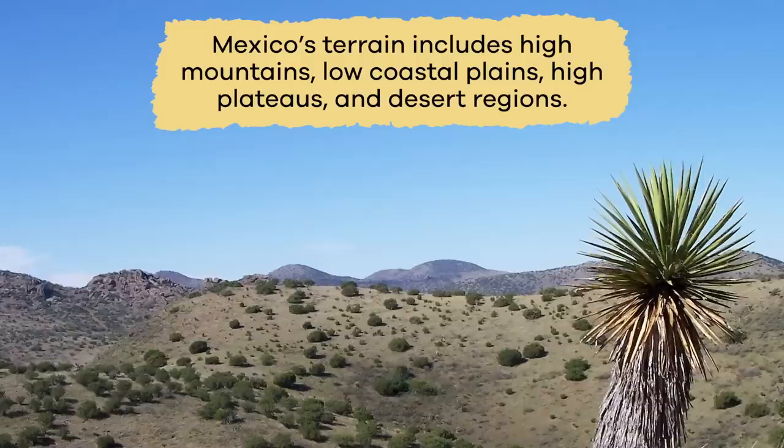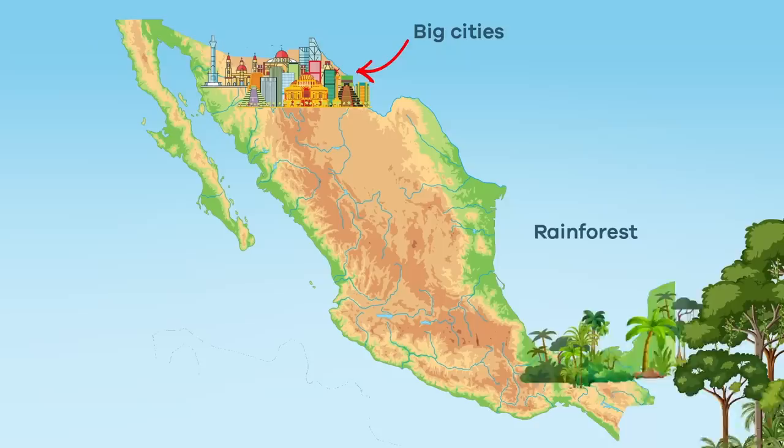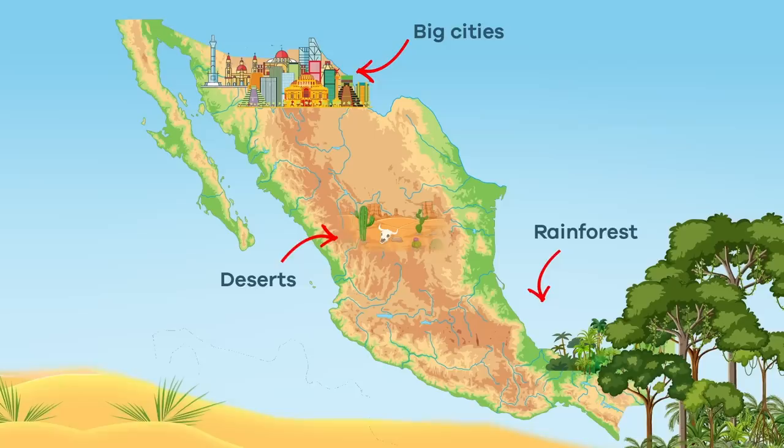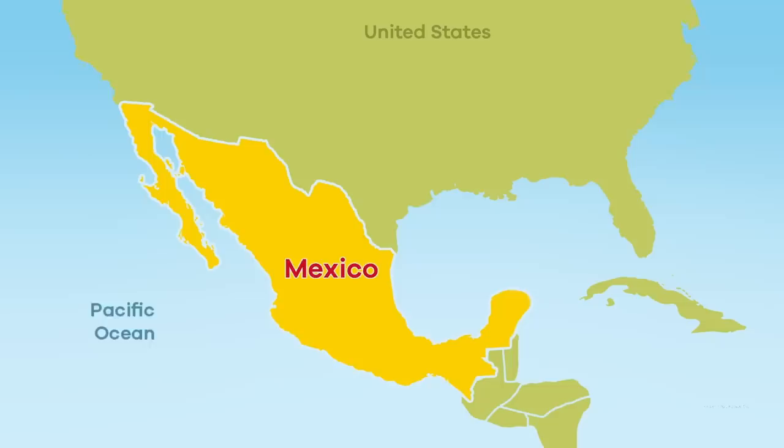Mexico's terrain includes high mountains, low coastal plains, high plateaus, and desert regions. Most of Mexico's bigger cities are found in the northern parts of the country, with rainforests in the south and east and deserts in the west. The climate varies from desert to tropical depending on the region.